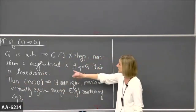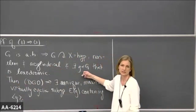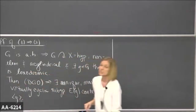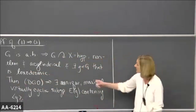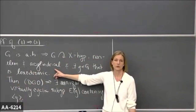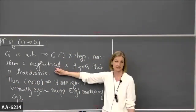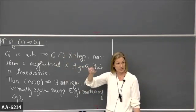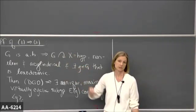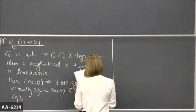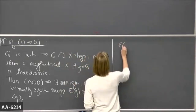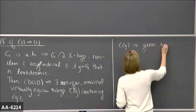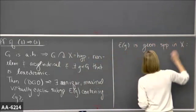So far we haven't really used acylindricity except to know there exists an element G. The claim is that E(G) is actually geometrically separated, and that's where acylindricity comes in. If you have a loxodromic isometry in an acylindrical action, the translates of the axis that these elements translate along will be geometrically separated. So E(G) is geometrically separated in X.